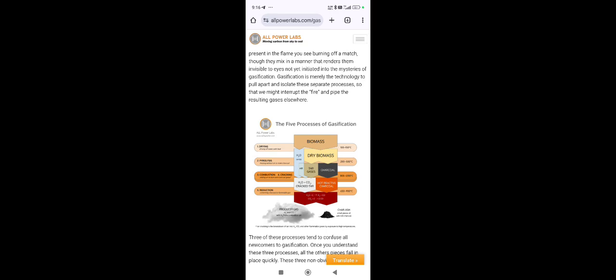The second process is pyrolysis. It happens around the temperature of 200 to 500 degrees Celsius. The pyrolysis process is heating the biomass without air to make charcoal.